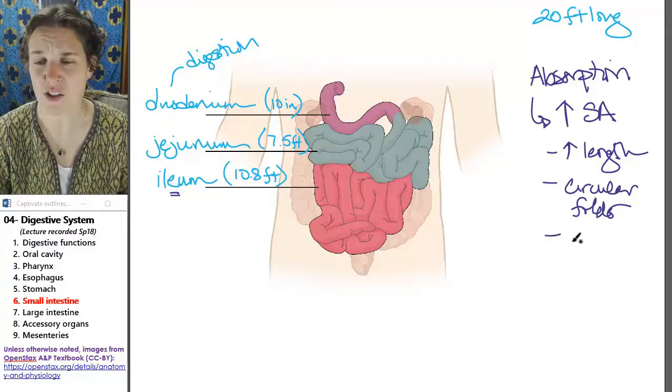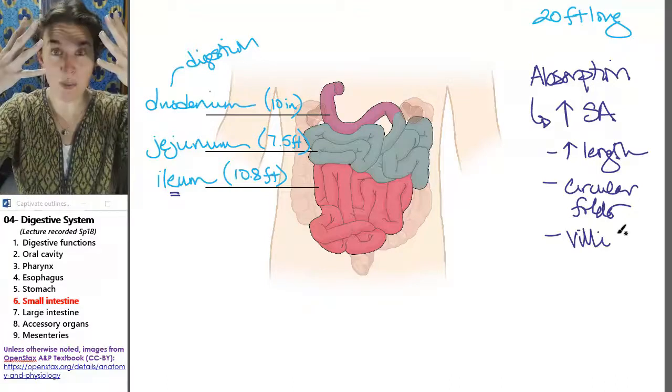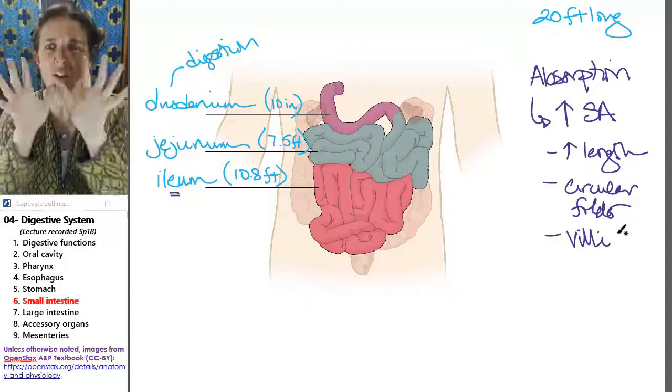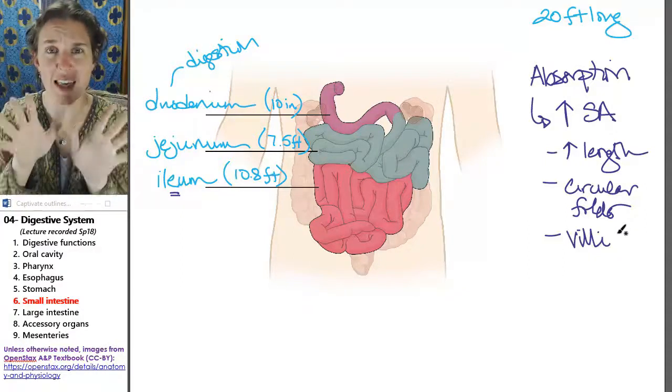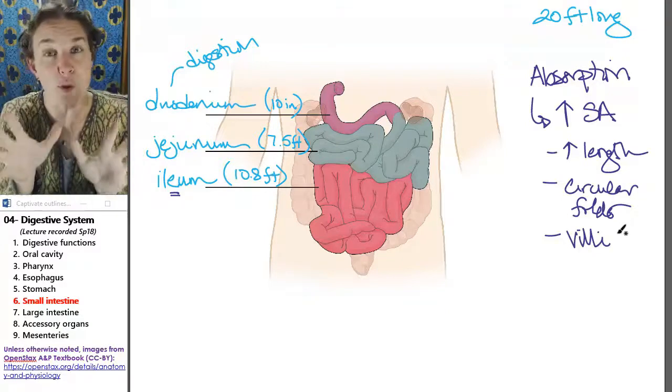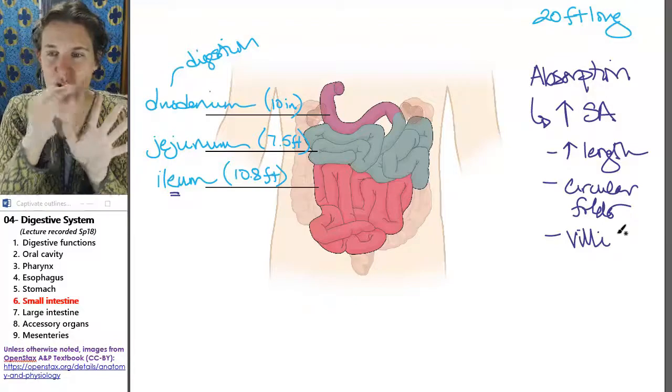You also have these little structures called villi, which are finger-like projections. So you have circular folds and on your circular folds, you have all of these finger-like projections that burst out into the lumen of the small intestine. Again, increasing the surface area.